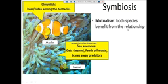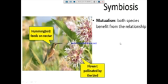An example of mutualism is the clownfish and the sea anemone — you may recognize this from the movie 'Finding Nemo.' The clownfish hides among the tentacles of the sea anemone, using it as their home. In return, the sea anemone gets cleaned, feeds off waste, and is protected from predators by the clownfish. Both benefit, so this is mutualism.